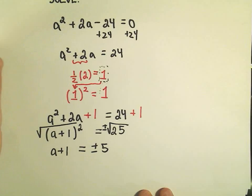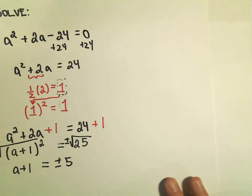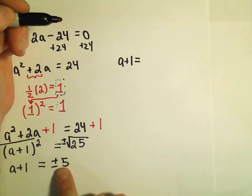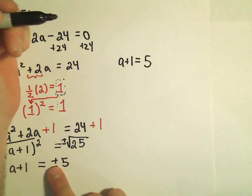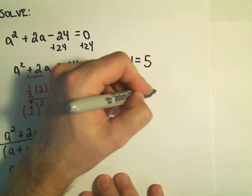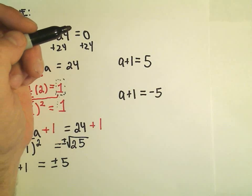And then, again, we just make this into two little separate equations. So we have a plus 1 equals positive 5. We'll make that one of the equations. And then we'll have a plus 1 equals negative 5. That'll be another one of our equations.